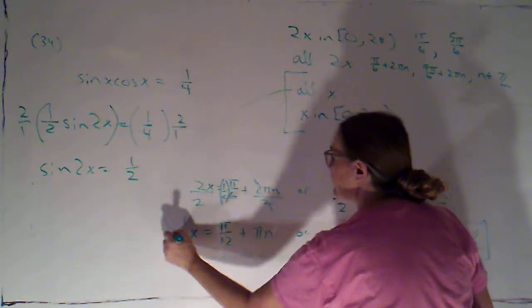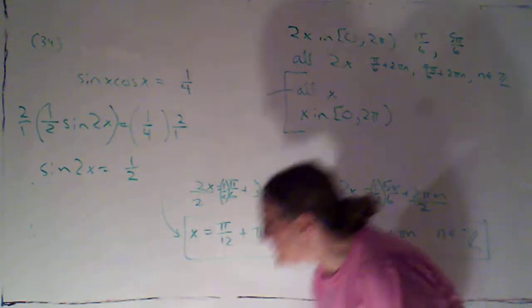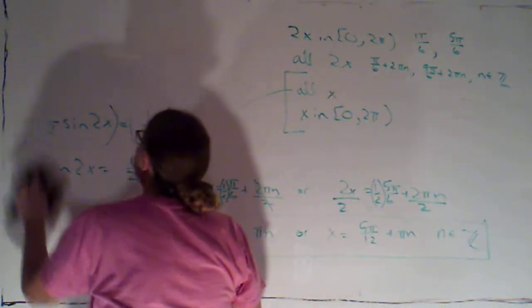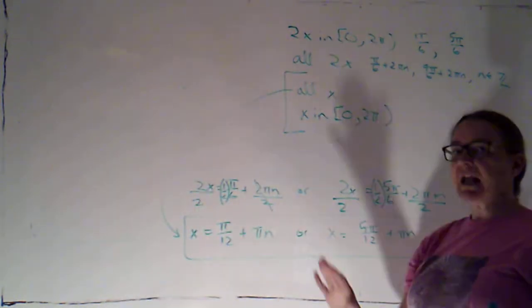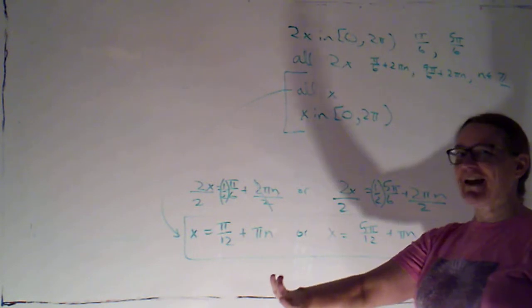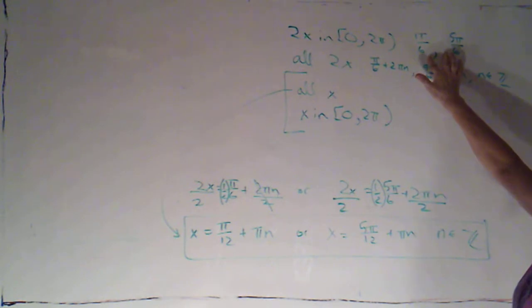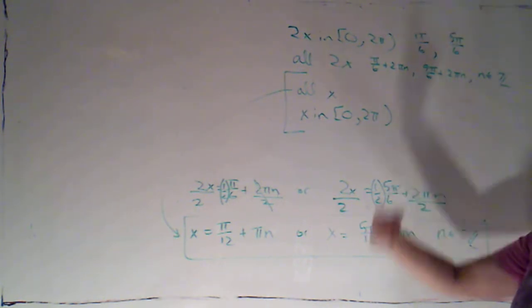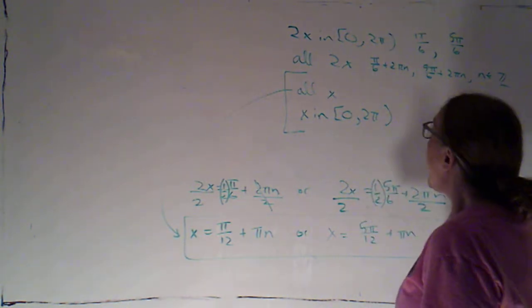So that's my answer for what all the values of x could be. Now, if I want to get just the values of x between 0 and 2 pi, I'm expecting there to be 4. Because I was working with 2x. If I work with sine of 2x, that's going twice as fast as sine of x. So, if the sine function has two solutions in one revolution, sine of 2x is going to have twice as many because it's essentially going around the unit circle twice in the same amount of time.